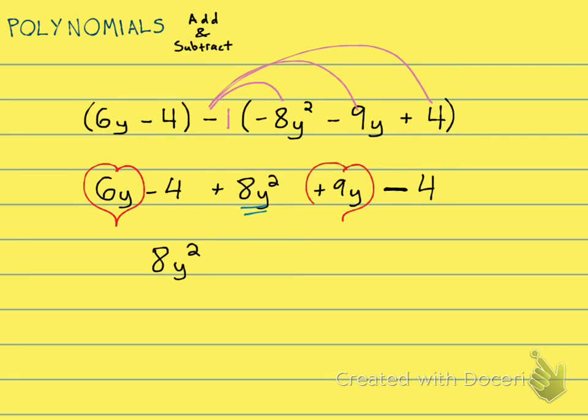Then I have minus 4 minus 4, and I can just combine those together. Minus 4 minus 4 is minus 8. And that's it, nothing else to do.